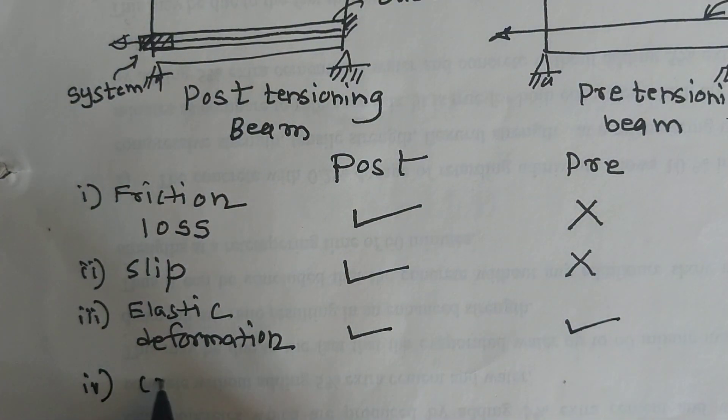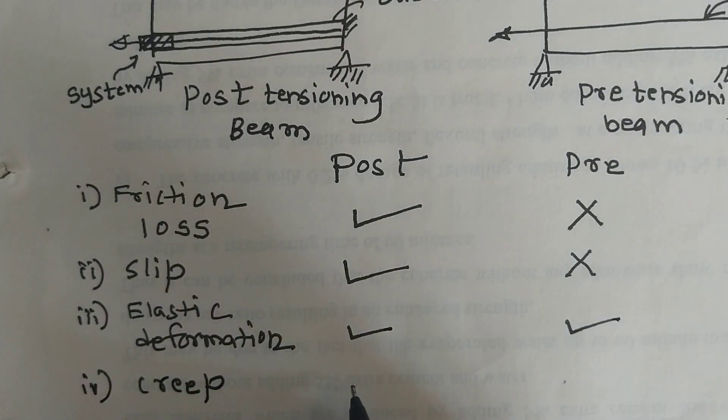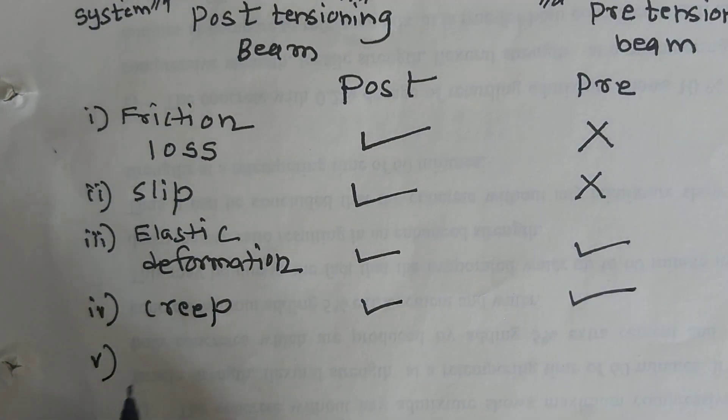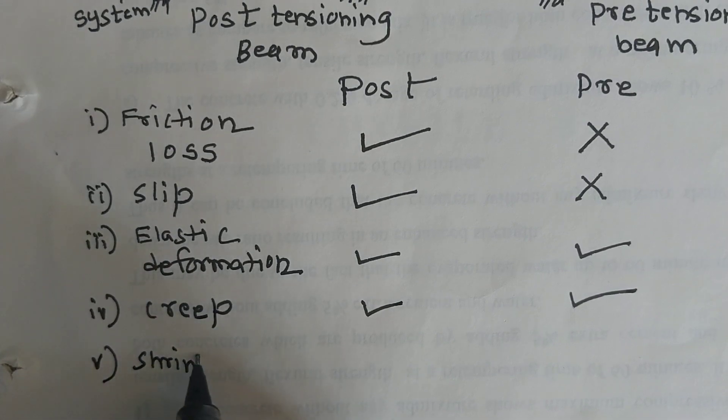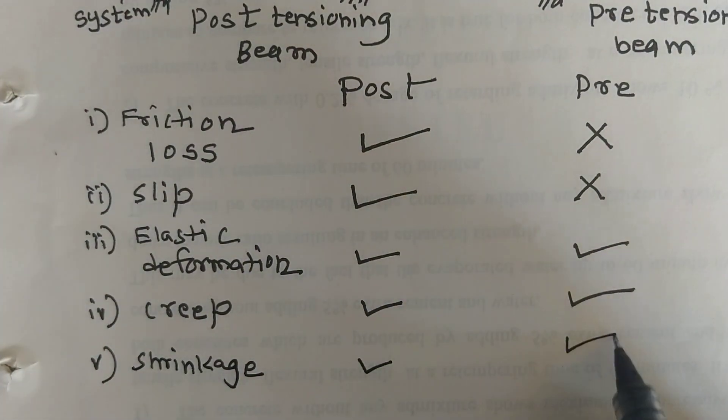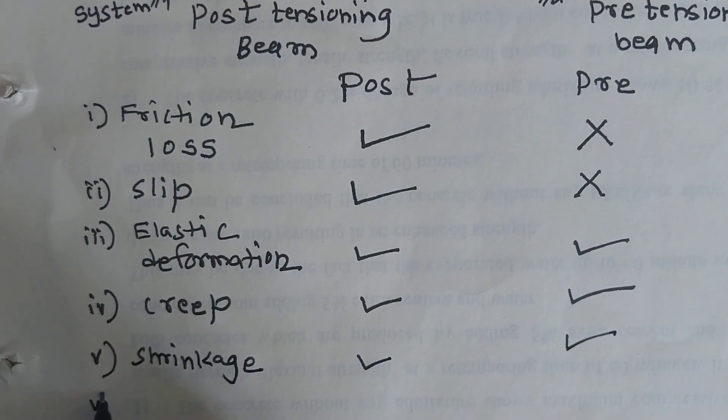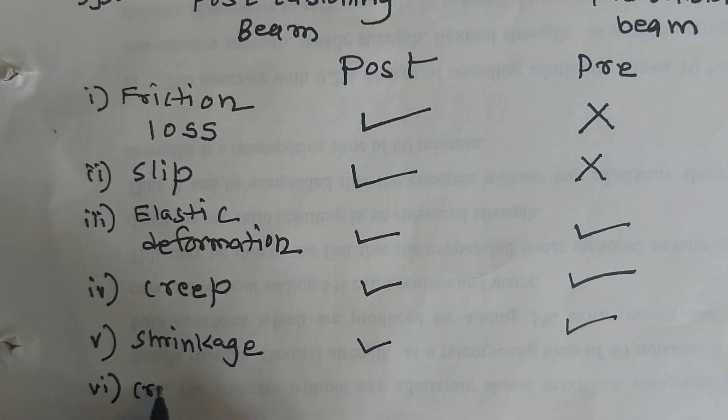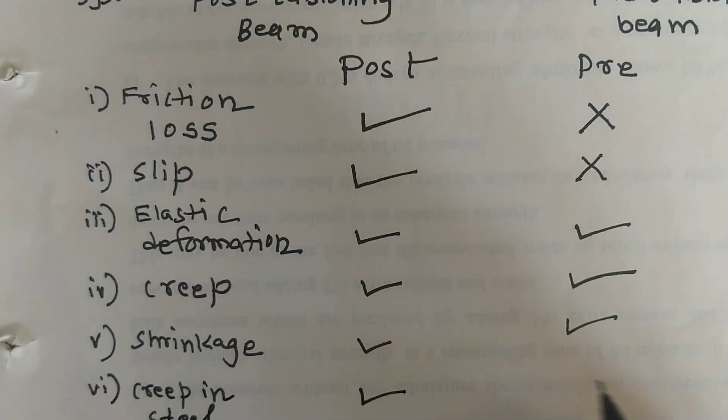Fourth one, creep loss is developed in both the condition. Fifth one, shrinkage loss is developed in both the condition. And last one, creep in steel loss is called relaxation loss. This loss is developed in both the condition.